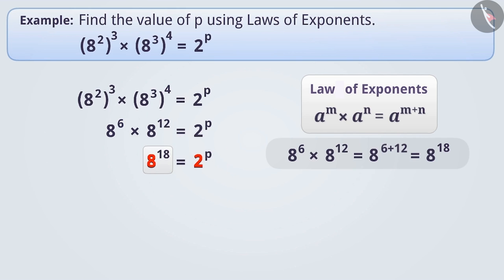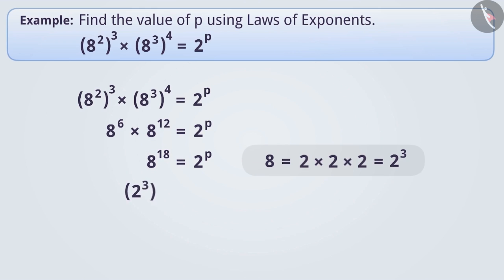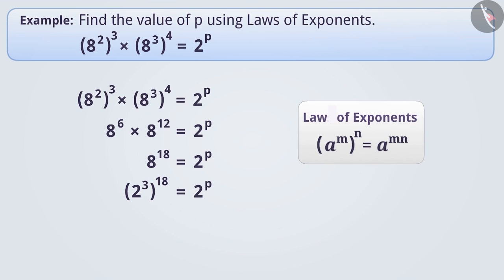To make the bases equal on both sides, we will express 8 as 2 × 2 × 2, which equals 2 to the power of 3. In this way, we can express 8 to the power of 18 as 2 cube to the power of 18. Here again, we will use the law: a to the power of m to the power of n, equals a to the power of mn.